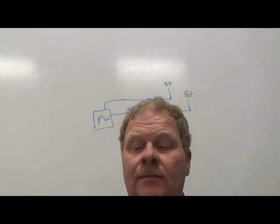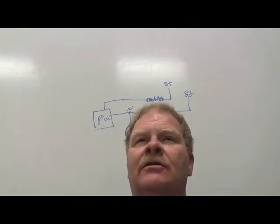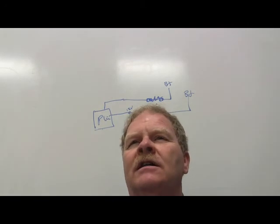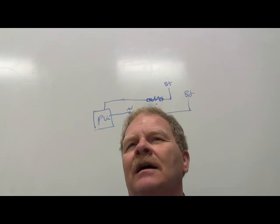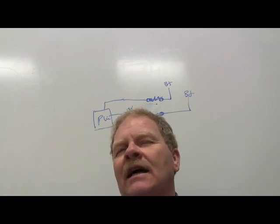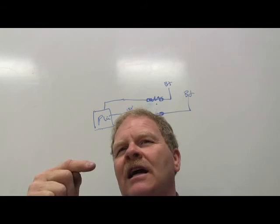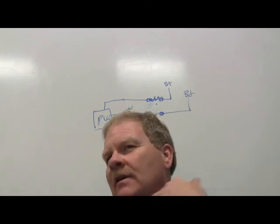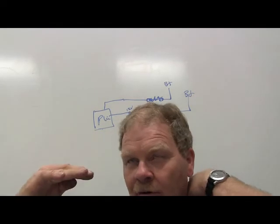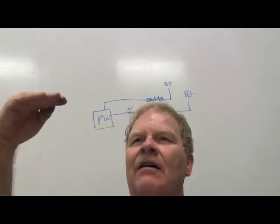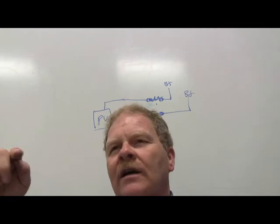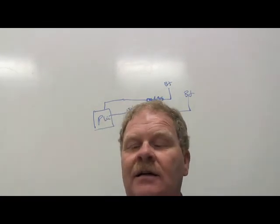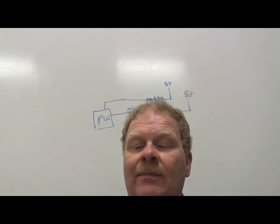Your oxygen sensor is a sort of analog input, but the computer converts it to a digital input — it calls the high side rich and the low side lean. You can see that on your scan tool as a little square wave going up and down — rich, lean, rich, lean. When it crosses a certain threshold, it considers that the high value, and below another threshold it's the low value.